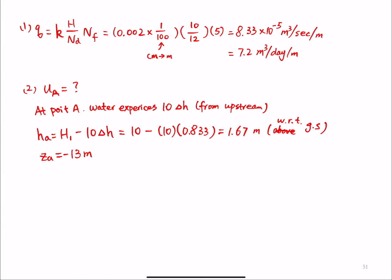And then the pressure at A, called UA, or let's use capital A here to be consistent. UA is unit weight of water times HA minus ZA. And if you plug in numbers here, unit weight of water 9.81 times HA is 1.67 minus negative 13. So it's plus 13. And this gives us 144 kilonewton per meter square.